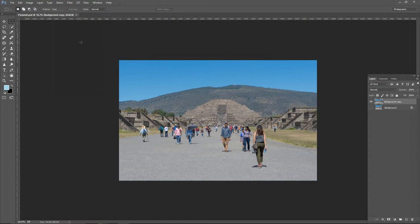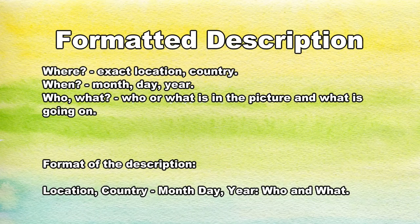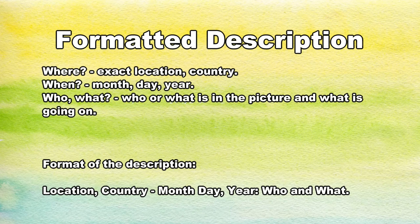Now I want to add some metadata to this image — this is something specific for editorial images. Editorial images have a specific format for the description. The description has to answer: Where (town, city, country), When (month, day, year), and Who and/or What. The format is: location (town/city), country – month and day, year: who and what is happening. Let me show you on our example.